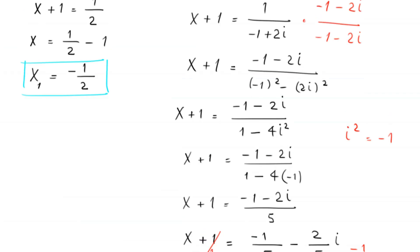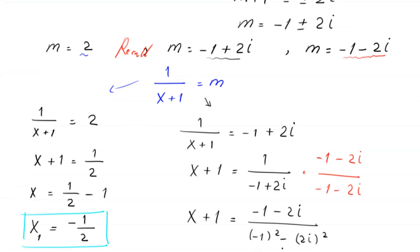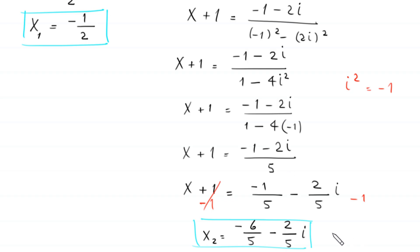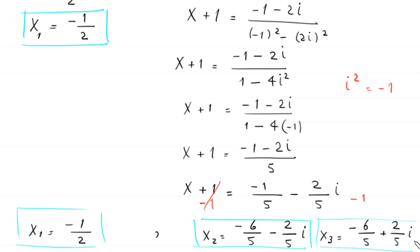When m equals negative 1 minus 2i, by the same process we get x₃ equals negative 6 over 5 plus 2 over 5 times i. The first solution we found was x₁ equals negative 1 over 2. So we have three solutions of this equation: negative 1 over 2, negative 6 over 5 minus 2i over 5, and negative 6 over 5 plus 2i over 5.